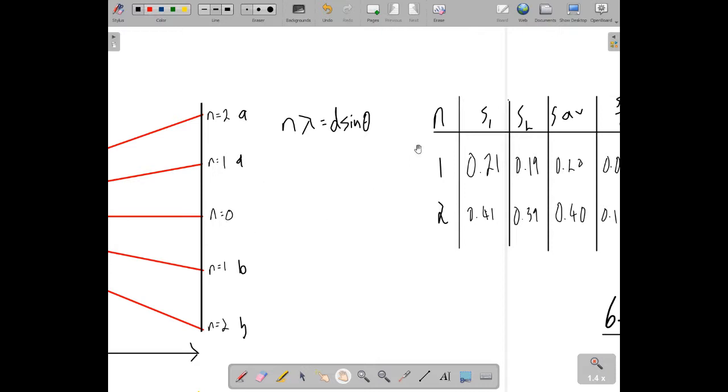So for n equals 1, I have two measurements, this separation 1 and this separation 2. So separation 1 and separation 2, but they're both for n equals 1. They're both my first order maxima, my first order bright spots.